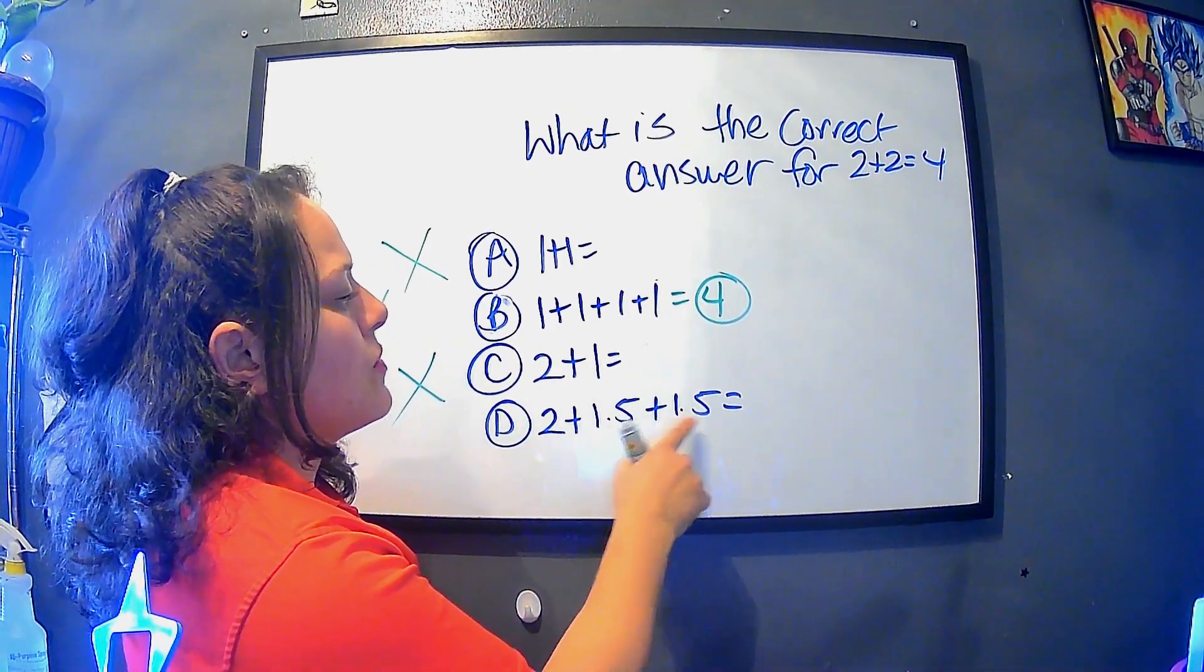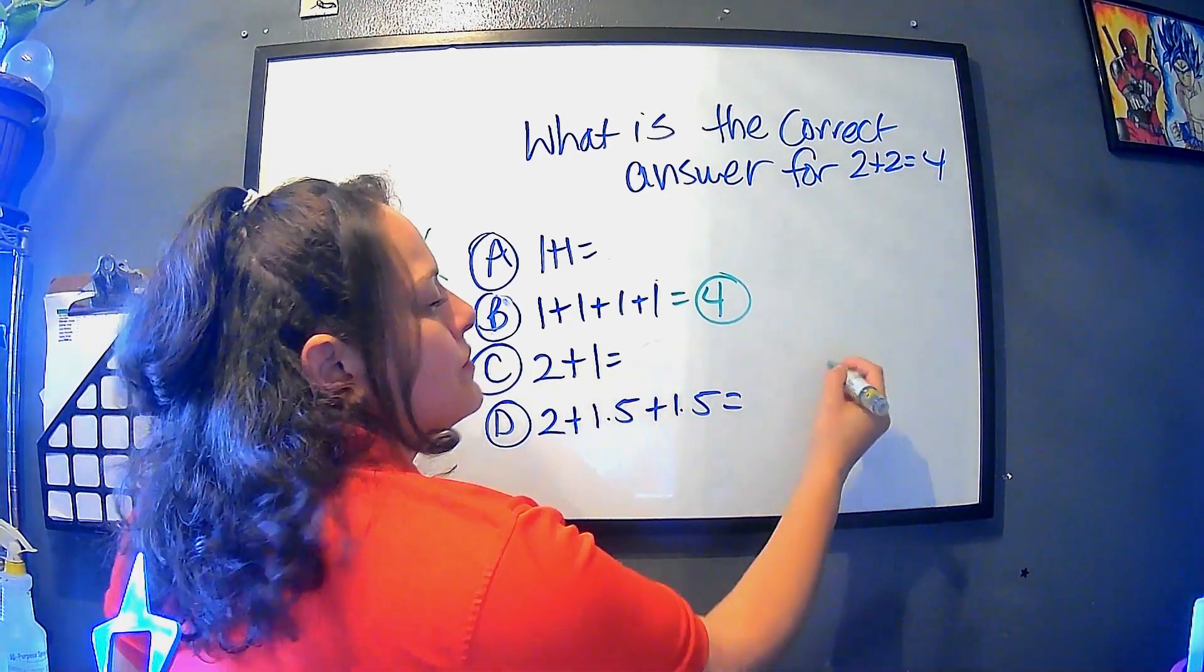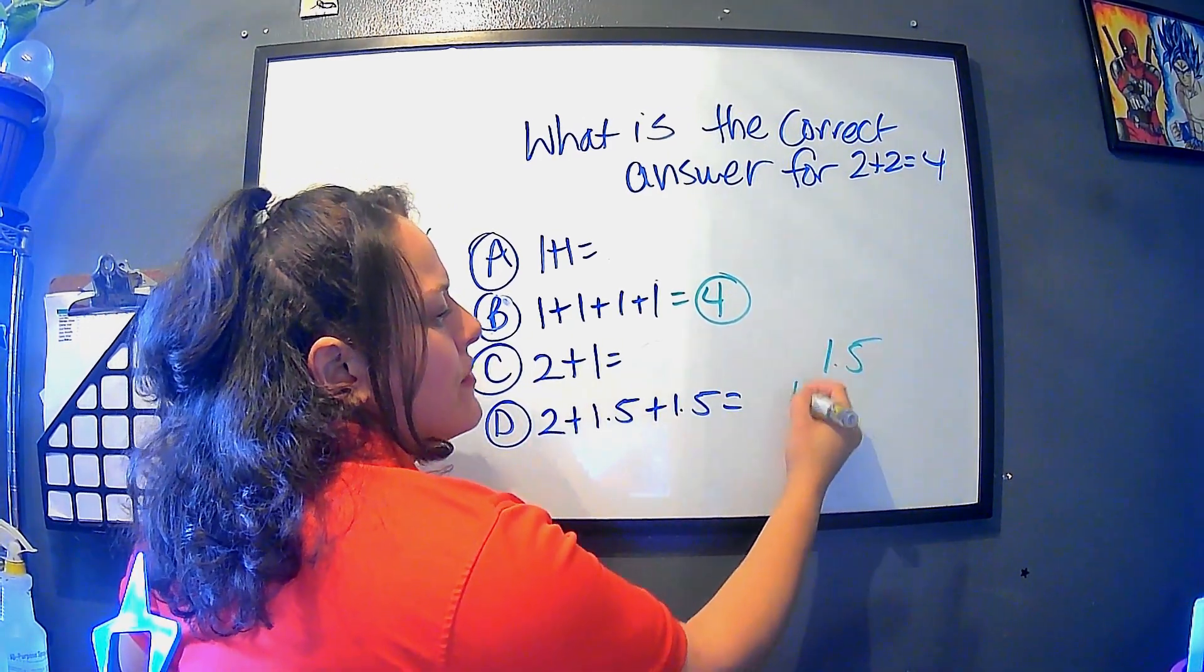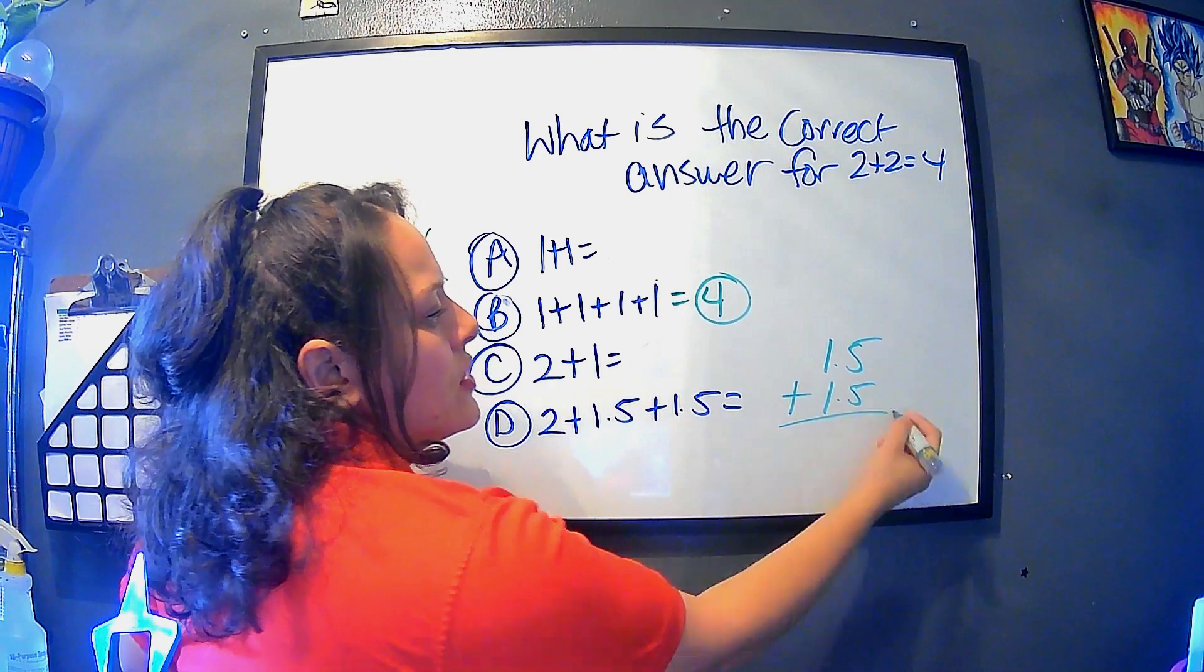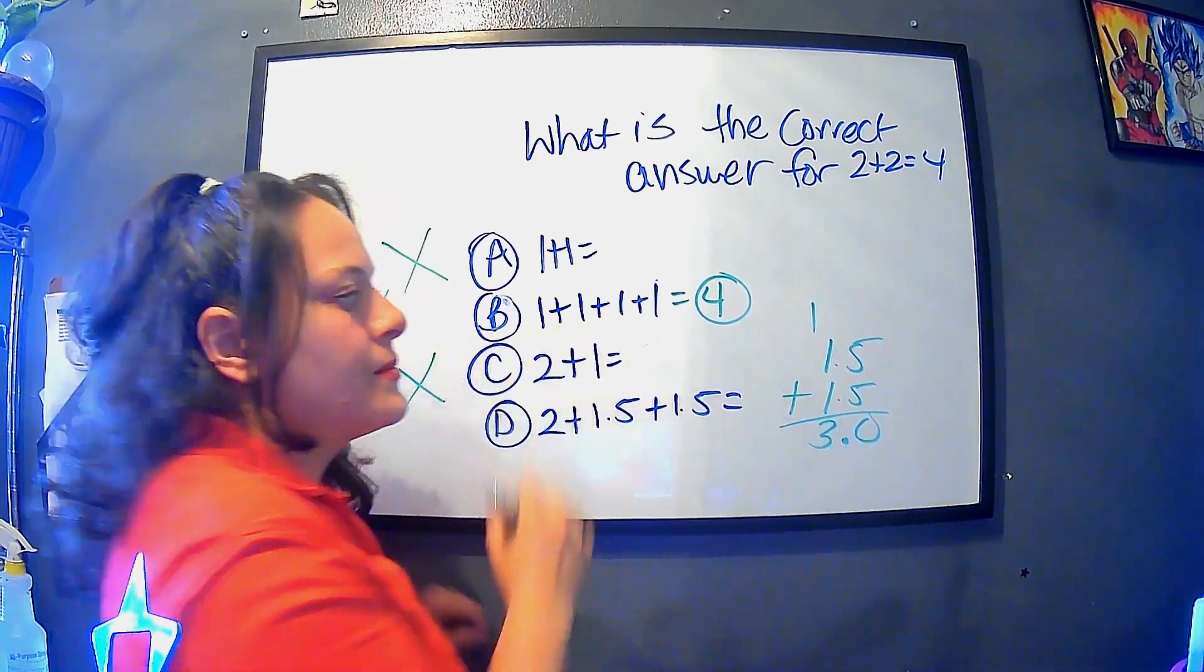So we have 1.5, 1.5. But, oh, the dreaded decimals. But let's see. We have 1.5 and we add the 1.5. Now that equals 3.